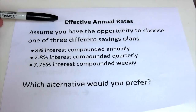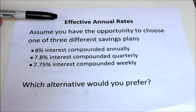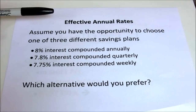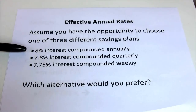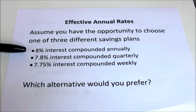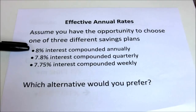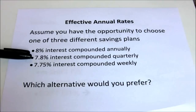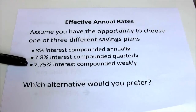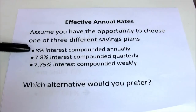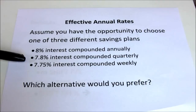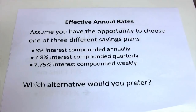Effective annual rates convert everything to their annual equivalent yield, which allows us to make the comparison. We don't really need to convert 8% compounded annually since it's already there. But compounding quarterly and weekly, we do have to convert those to an annual equivalent in order to see which of these three savings plans offers the better rate of return.